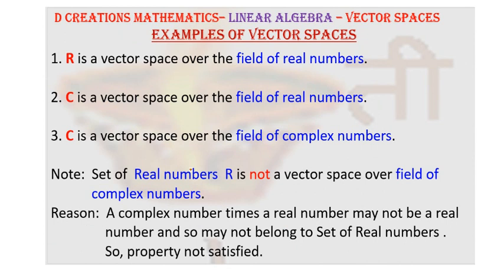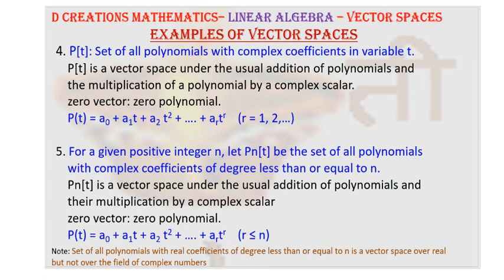Then we saw some typical examples of vector space such as set of real numbers over real numbers, set of complex numbers over real numbers and set of complex numbers over complex numbers. We also saw an exception where set of real numbers is not a vector space over field of complex numbers. Then we looked at set of polynomials with complex coefficients in variable t. And here we saw that it is a vector space and here the zero vector was just a zero polynomial. All the coefficients if they are zero that gives you a zero polynomial.